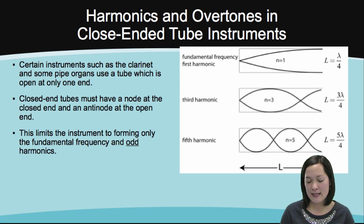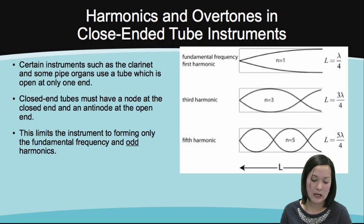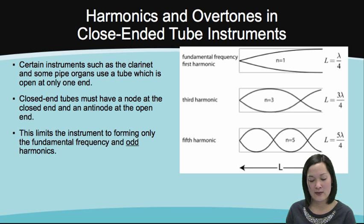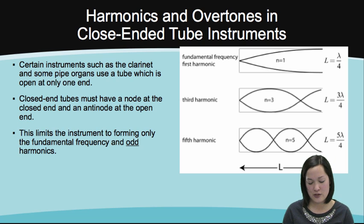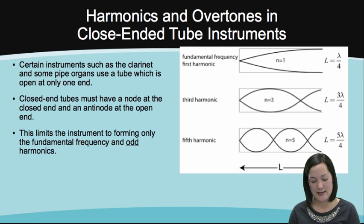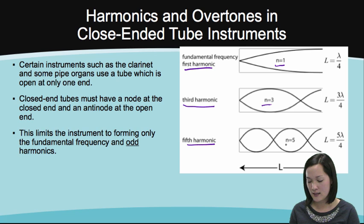To find the harmonics and overtones in closed-end tube instruments — for instruments such as the clarinet and some pipe organs where there is a tube open at only one end — closed-end tubes must have a node at the closed end and an anti-node at the open end. This limits the instrument to forming only the fundamental frequency and odd harmonics: the first harmonic N equals 1, the third harmonic N equals 3, and the fifth harmonic N equals 5.